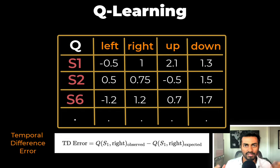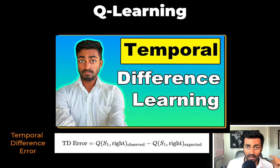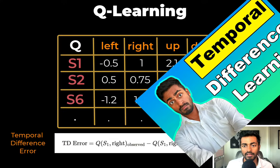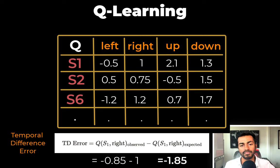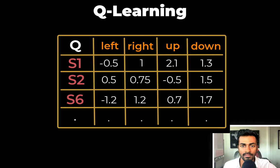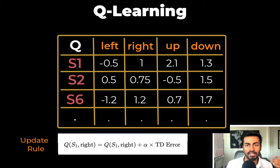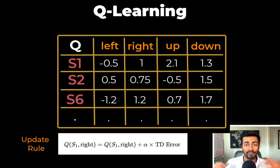And this difference is an error that is known as a temporal difference error. It's called the temporal difference error because we are comparing Q values of two different time steps, and their difference is the error, hence the name. For more information on this topic, I created another video right here. But for now, temporal difference error is now going to be the observed value minus the expected value, which will turn out to be negative 1.85.